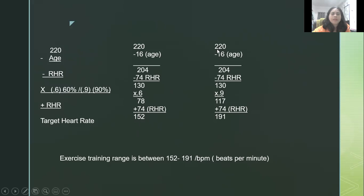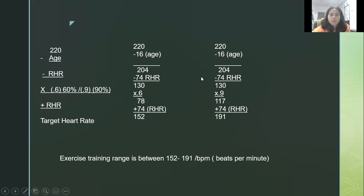To get the maximum training range: 220 less your age gives 204, less your resting heart rate of 74, which gives 130. Multiply by 0.9 and that gives 117. Add your resting heart rate and it gives you 191. Note that you have your own training range due to individual differences in level of fitness, so resting heart rate will vary.